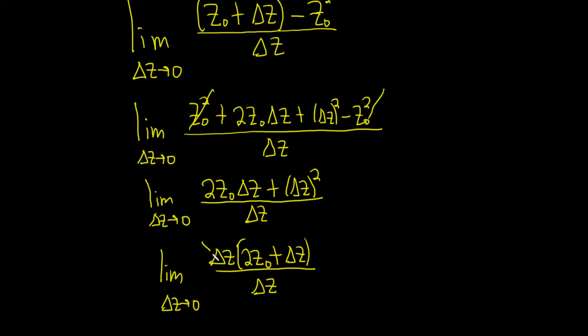It's all being divided by delta z, and finally we can cancel the delta z's. This is equal to the limit as delta z approaches 0 of 2z0 plus delta z.